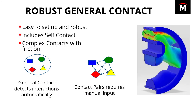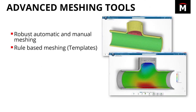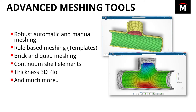Additionally, all contact is treated as no-penetration by default. And while you can change this, there is no need to manually define contact pairs between components. Abaqus also brings us a wide array of new meshing tools such as brick and quad elements, continuum shell elements, and much more.